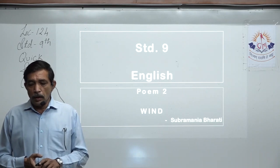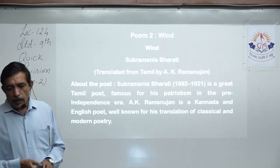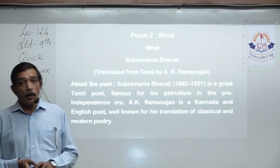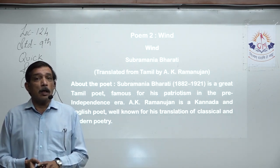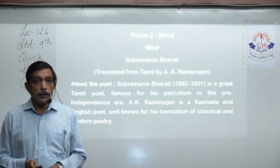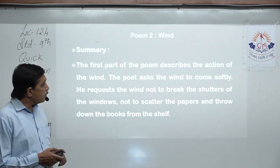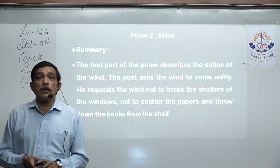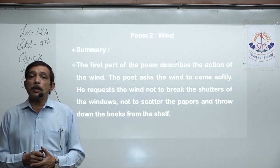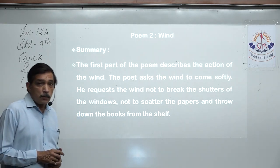The next poem is Poem 2: 'Wind', written by Subramanya Bharati — a great Tamil poet famous for his patriotism during the pre-independence era who wrote many patriotic poems to encourage freedom fighters. We will first learn the summary and then the figures of speech. The whole poem is in continuous form without separate stanzas. The first part describes the destructive actions of the wind — even without storm-level velocity, wind coming with force disrupts many things. The poet asks the wind to come softly.